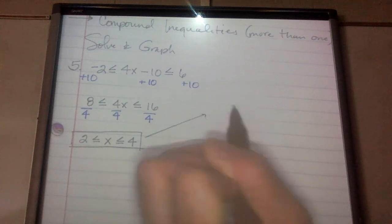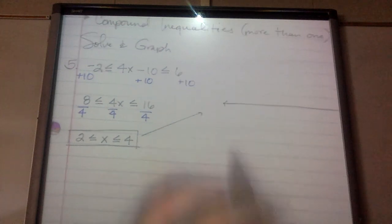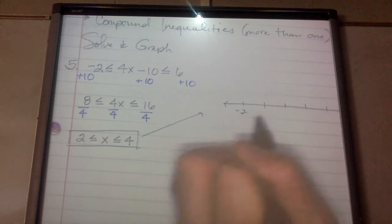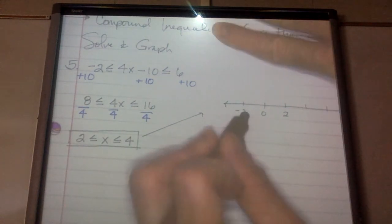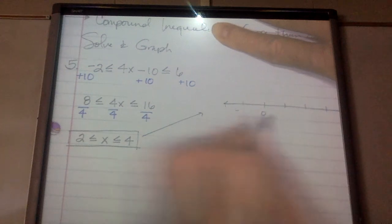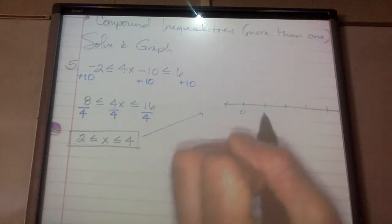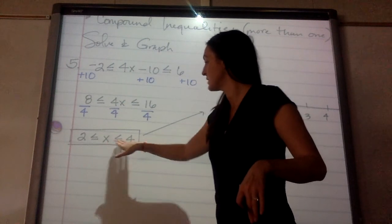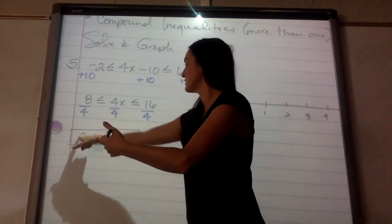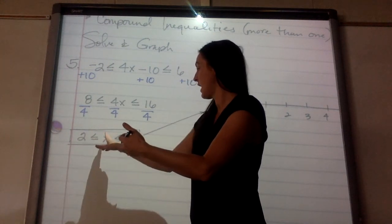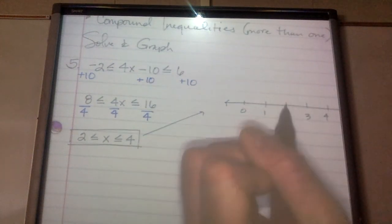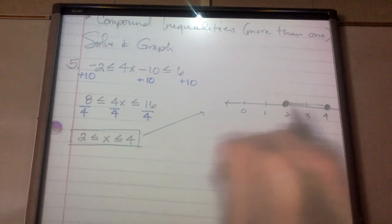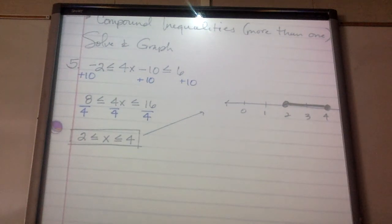Now we're going to graph it. On a number line I'll put 0, 1, 2, 3, 4, 5. This statement is telling me that x has to be in between 2 and 4. Reading it starting in the middle: x is greater than or equal to 2 and x is less than or equal to 4. So I'm going to have a closed circle on both 2 and 4, and x is the values in between.